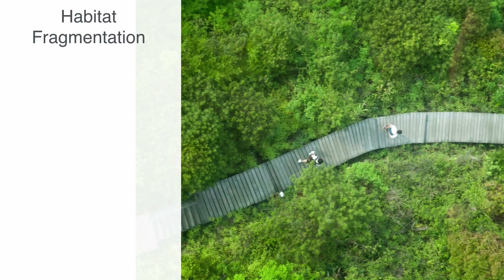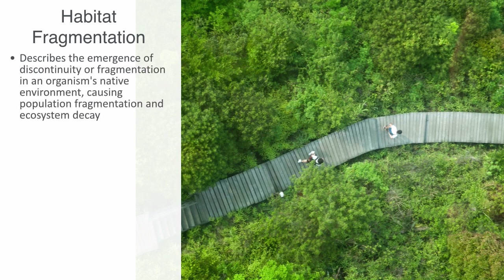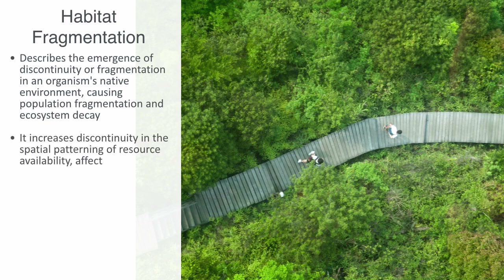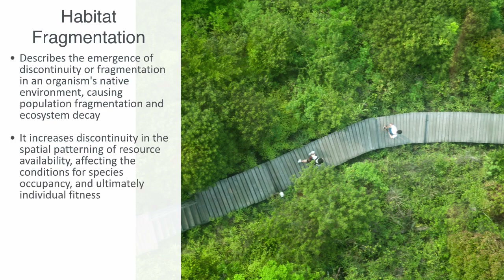Habitat fragmentation describes the emergence of discontinuities or fragmentations in an organism's native environment, causing population fragmentation and ecosystem decay. It is a process during which a large expanse of habitat is transformed into a number of patches of smaller total size, isolated from each other by habitats unlike the original one. It includes discontinuities in the spatial patterning of resource availability, affecting the conditions for species occupancy and ultimately individual fitness. Fragmentation can arise via both natural and anthropogenic processes in terrestrial and aquatic systems.